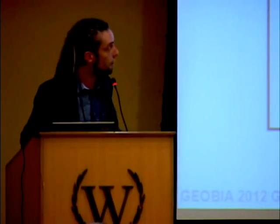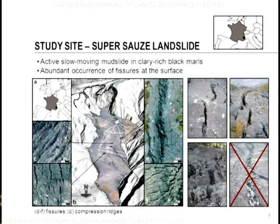So usually, those features, they have been mapped during field surveys. Now, our study site where we also often go for field surveys is Super Source landslide. It's a slow-moving landslide in the southern French Alps, which developed in clay-rich black marl since the 1960s. And you can see here in the field photos, you can see some examples of the fractures that we can find at the surface. And there's a series of aerial images now available with resolutions between 5 and 10 centimeters. And you also can see the patterns of those fractures there.